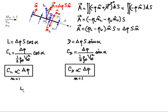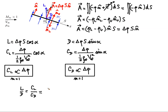What about the ratio? Lift over drag, which is the same as the ratio of the coefficients. The first part is the same, and then you have cosine alpha for lift and sine alpha for drag. And that's the same as the inverse of the tangent.